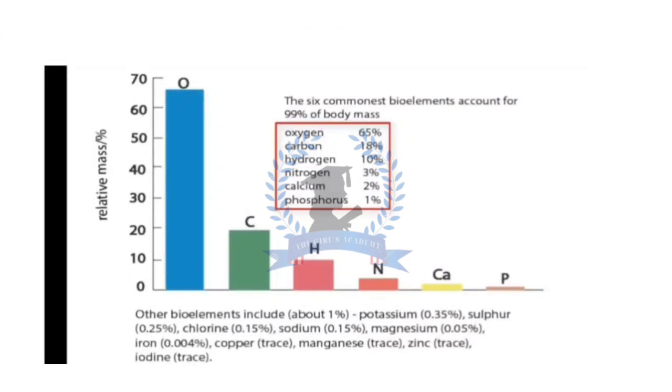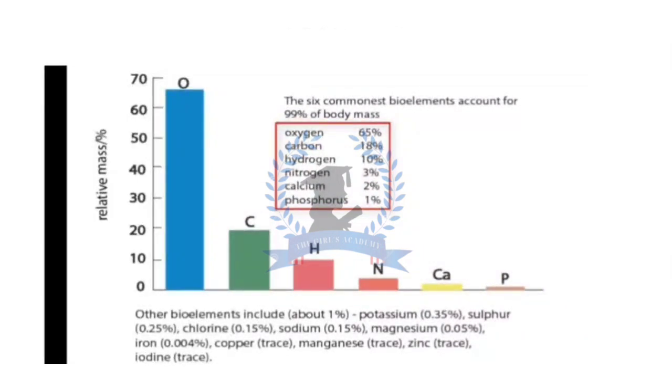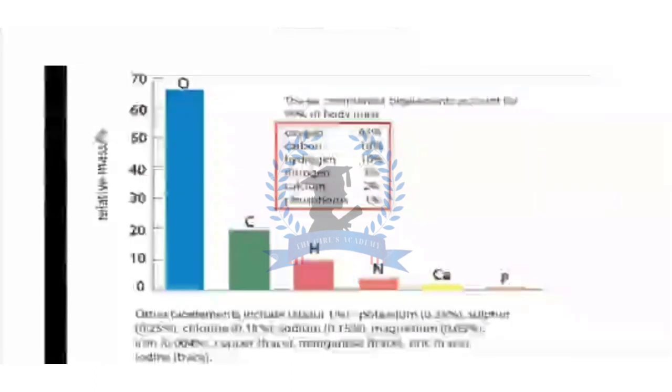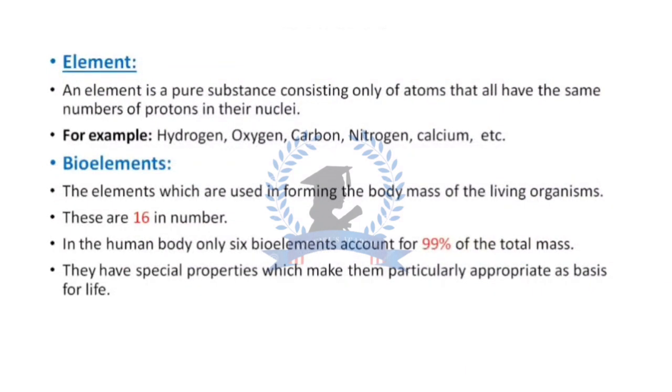The remaining elements make just 1% body mass: potassium 0.35%, sulfur 0.25%, chlorine 0.15%, sodium 0.15%, magnesium 0.05%, iron 0.004%, copper in trace amounts—trace means very little—manganese, zinc, and iodine in trace amounts. So these are the 16 bioelements. These bioelements have special properties which make them particularly appropriate as a basis for life. These 16 bioelements can form life.